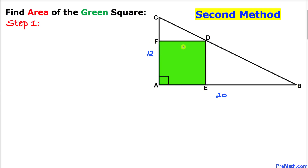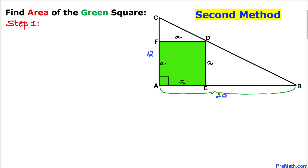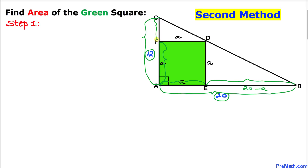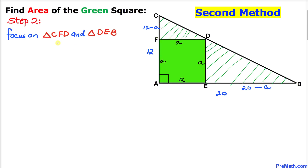Now for the second method. Let's label the side lengths of the square as 'a', so all side lengths are 'a'. Since the whole horizontal side of the triangle is 20 and one portion is 'a', the remaining portion is 20 minus a. Likewise, the remaining vertical portion is 12 minus a.